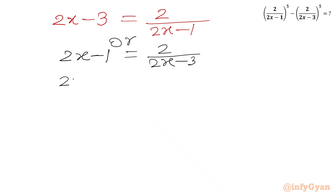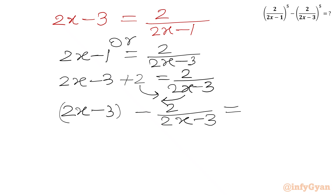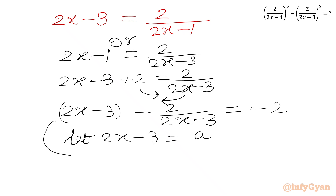Now I can write LHS as 2x - 3, and adding 2 gives 2/(2x - 3) on the RHS. Taking 2 to the RHS and 2/(2x - 3) to the LHS, we get 2x - 3 - 2/(2x - 3) = -2. Now we suppose 2x - 3 = A, so the equation becomes A - 2/A = -2.